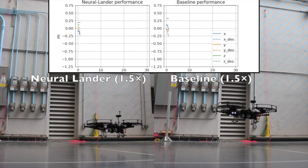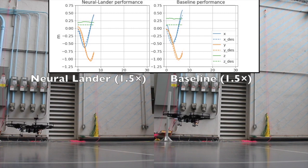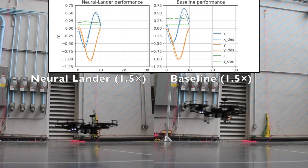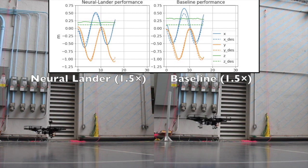In our next set of tests, we have the drone track a moving trajectory very close to the ground. As you can see, the Neural Lander outperforms the baseline controller not only in tracking the desired height, but also in tracking the desired horizontal position.